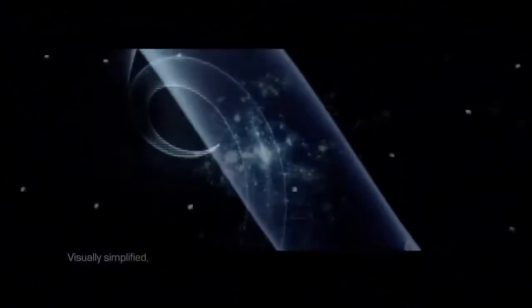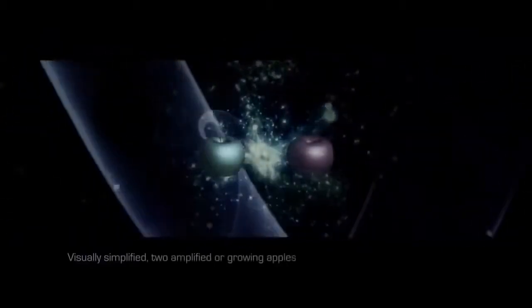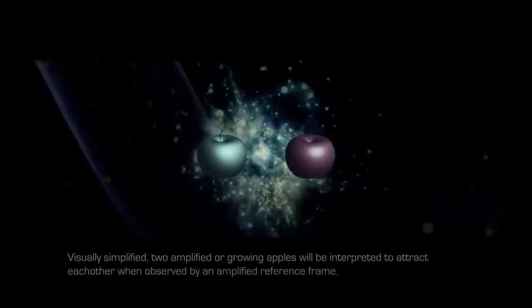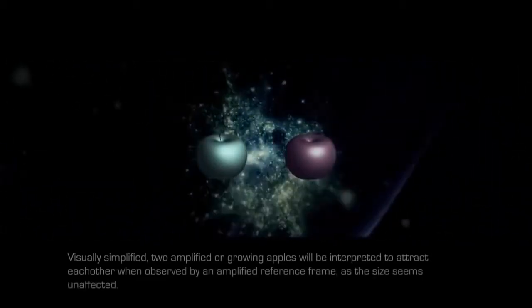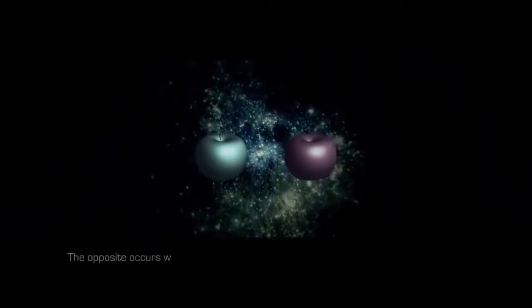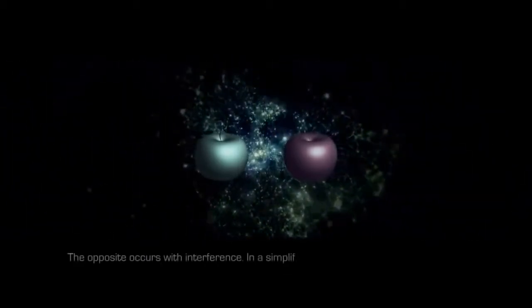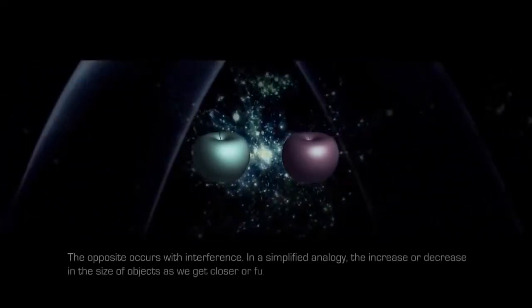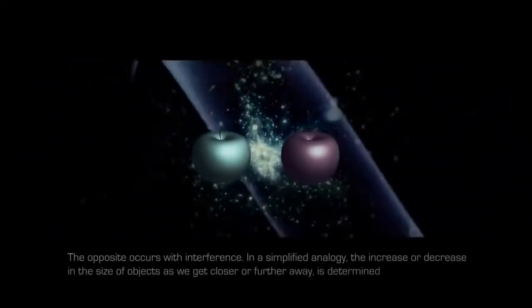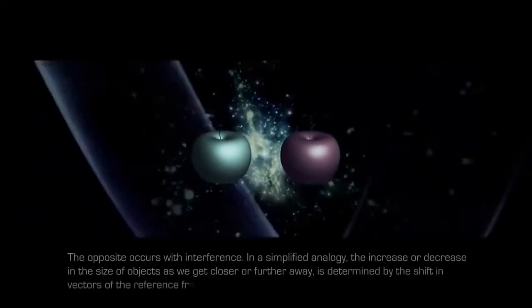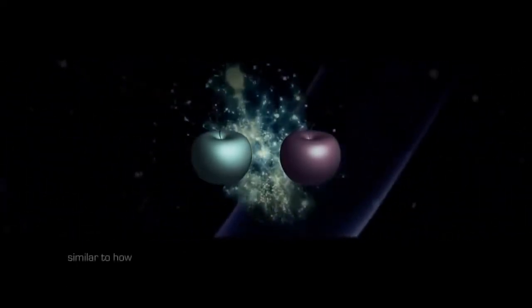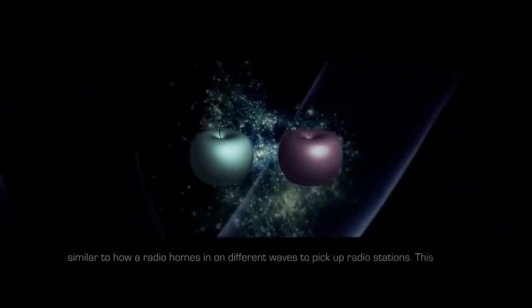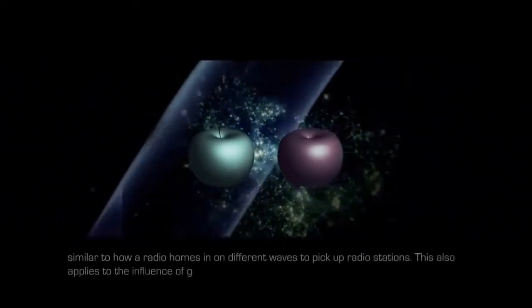Visually simplified, two amplified or growing apples will be interpreted to attract each other when observed by an amplified reference frame, as the size seems unaffected. The opposite occurs with interference. In a simplified analogy, the increase or decrease in the size of objects as we get closer or further away is determined by the shift in vectors of the reference frame, similar to how a radio hones in on different waves to pick up radio stations. This also applies to the influence of gravity.